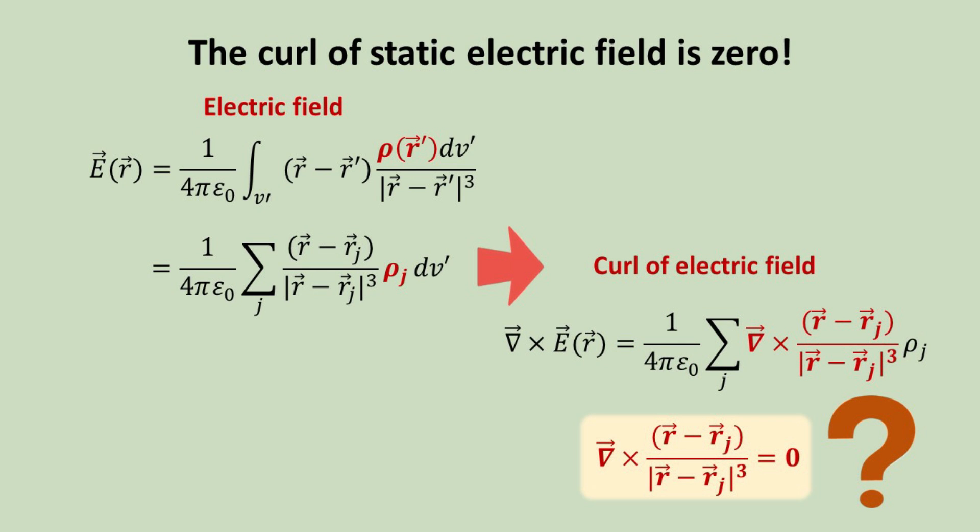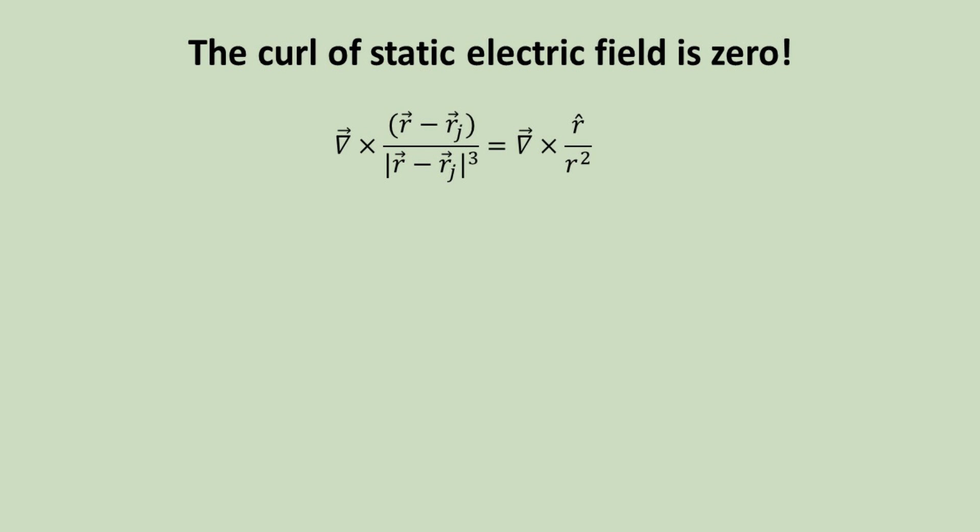Now, we are ready to take the curl of the electric field. For the curl to be zero, the curl of the radial vectorial quantity as shown must be zero. Let's check. We can rewrite this quantity in a more compact form as shown. This is just the radial field, whose magnitude decays as one over radial distance square.